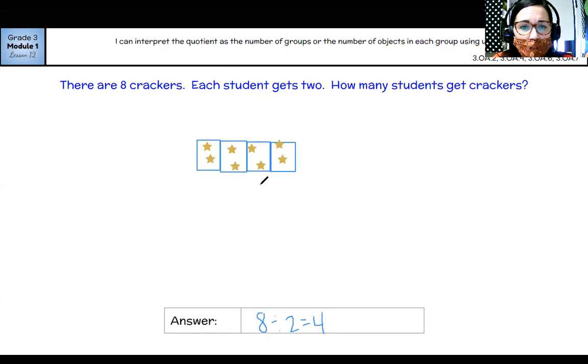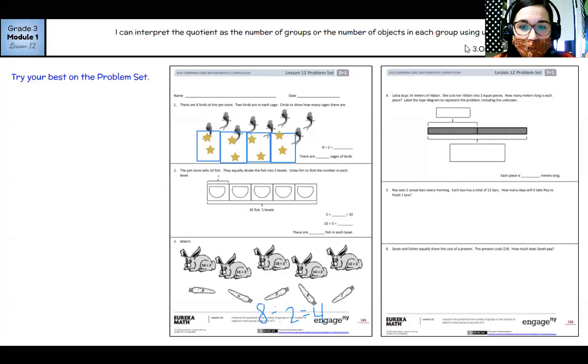One, two, three, four. So in division, you're thinking that what you're figuring out is either the number of groups or the number of objects in each group. And those two things can change. Okay. Now it's your turn. Try your best on the problem set.